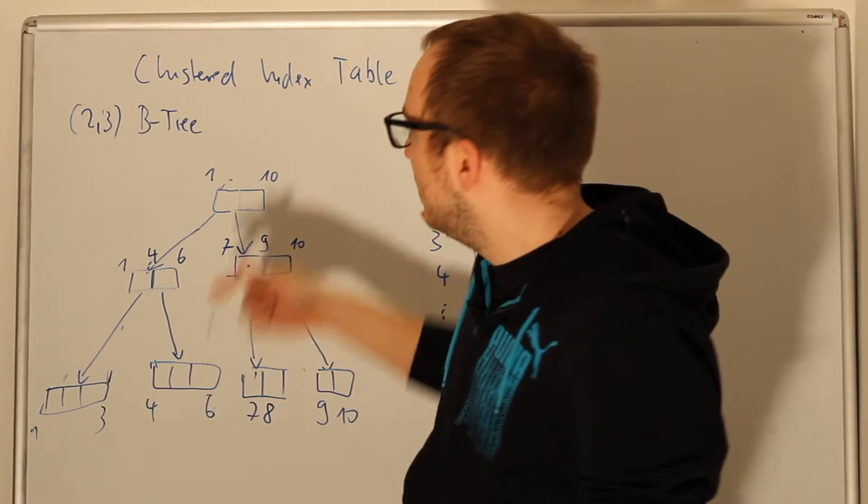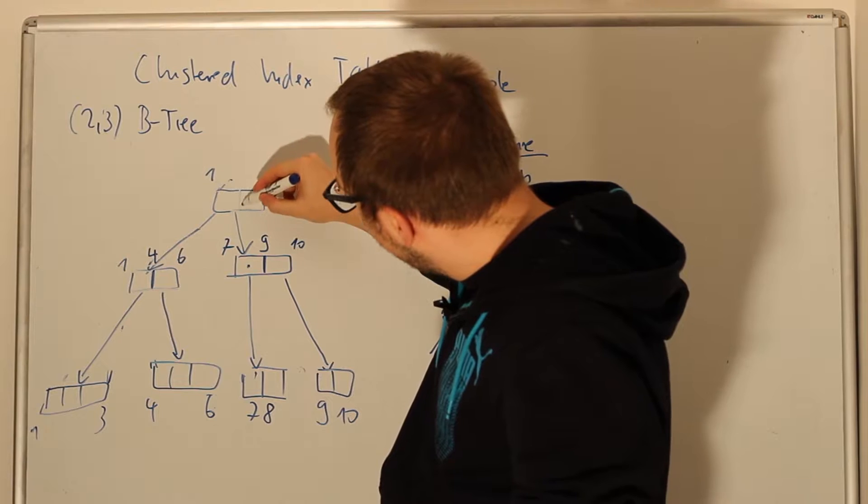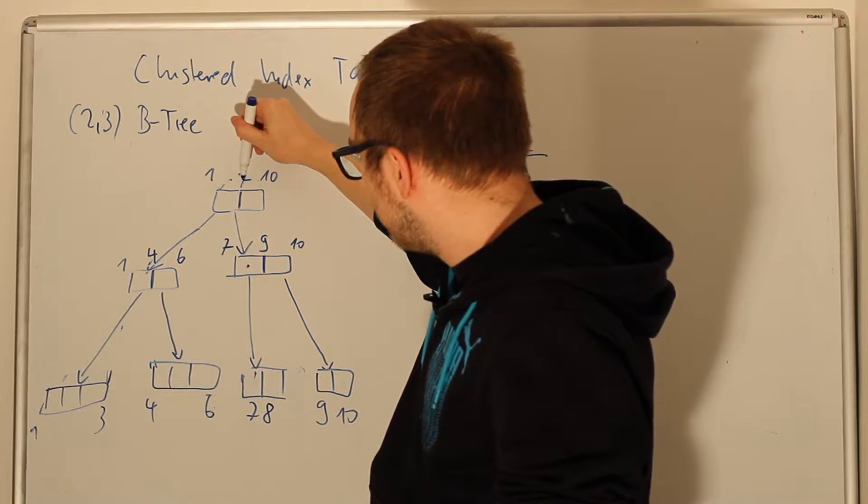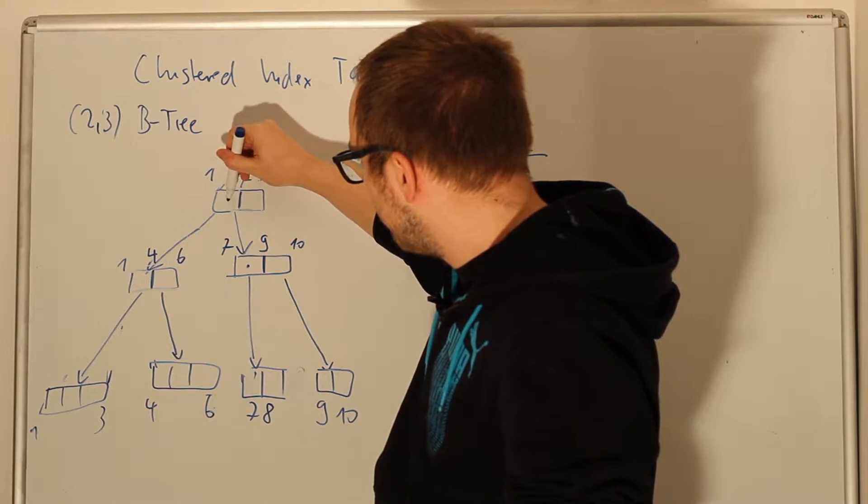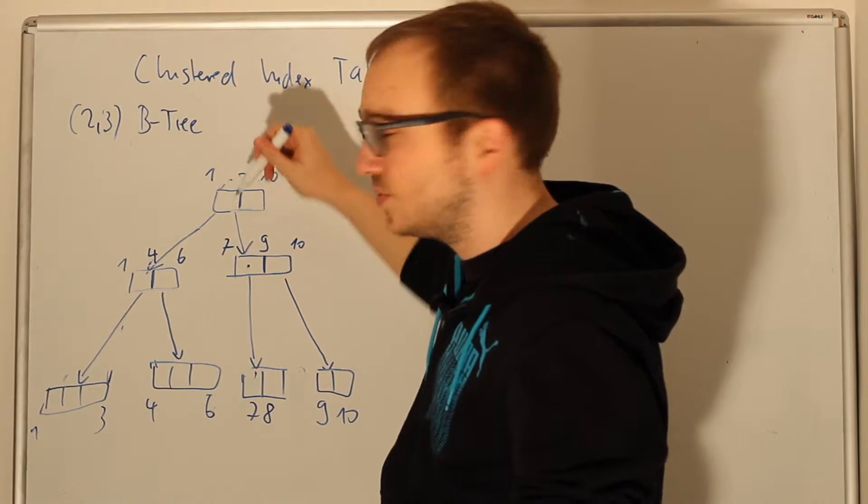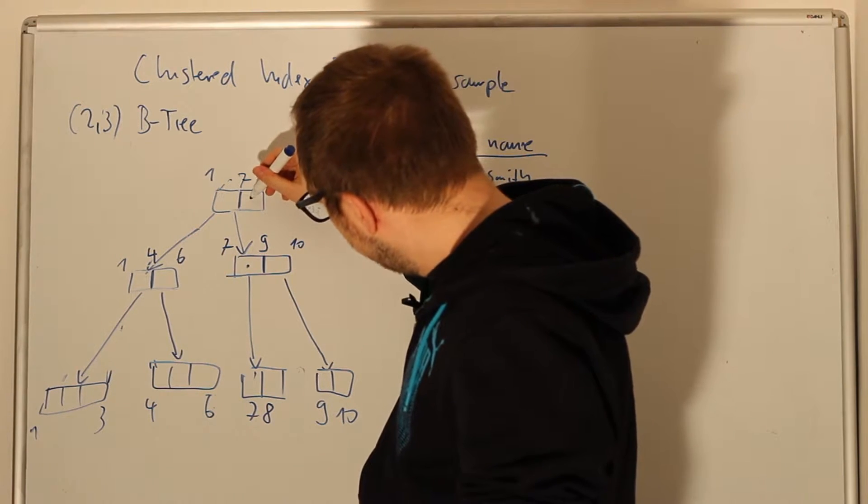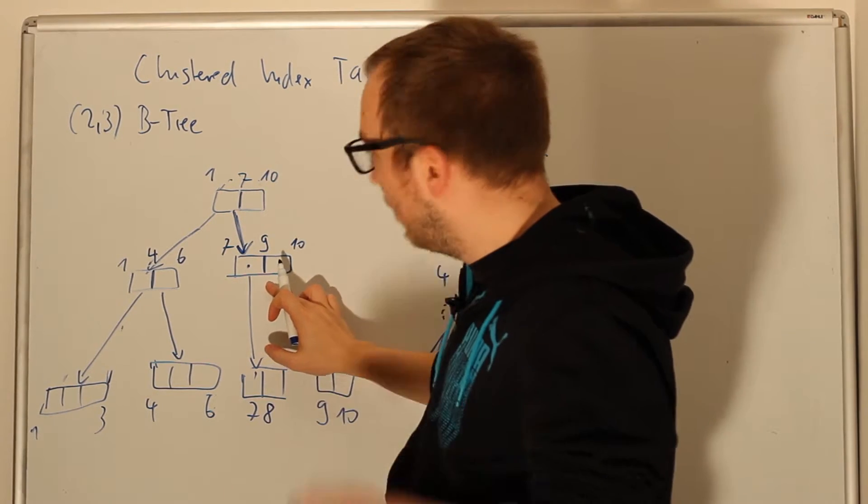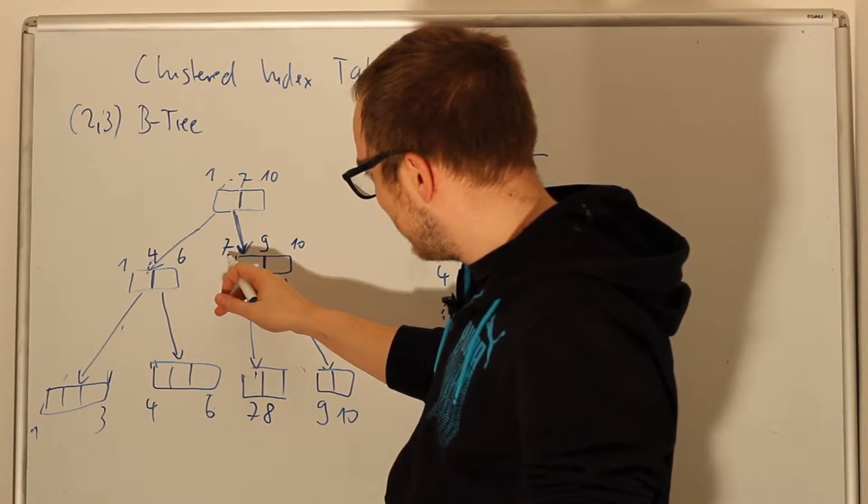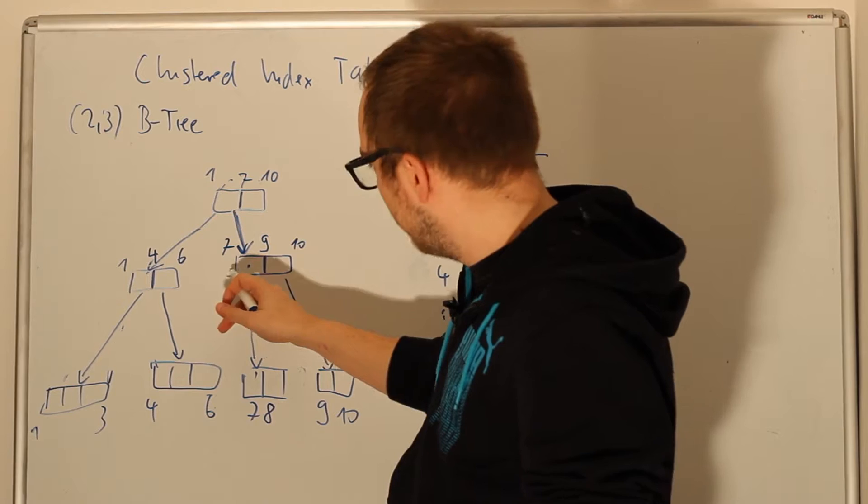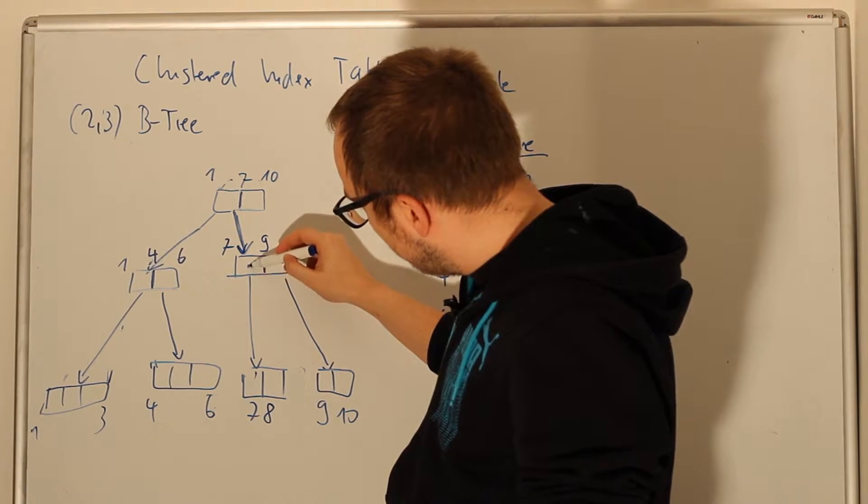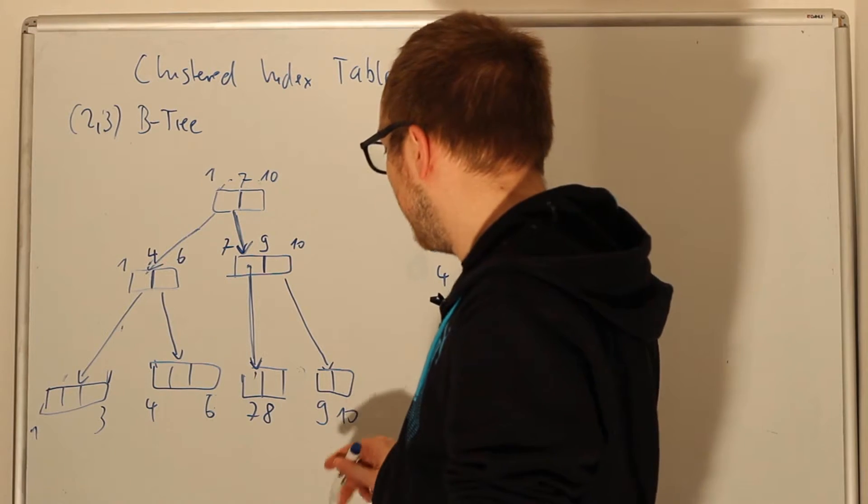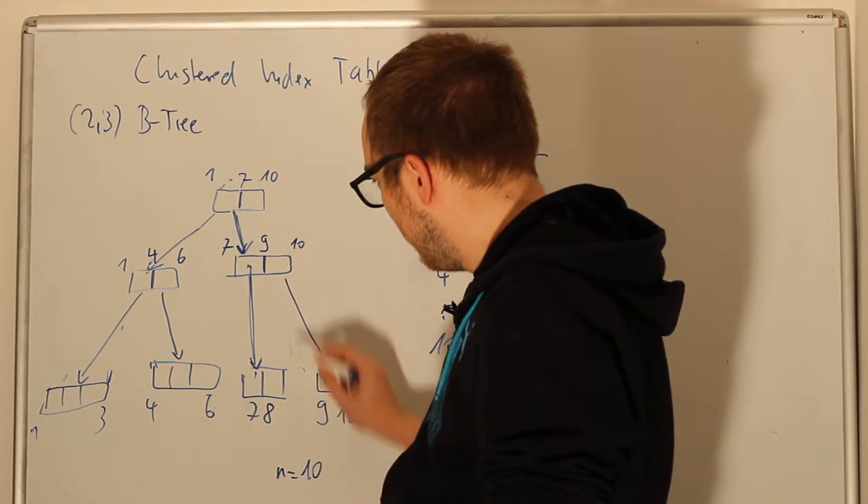Let's assume we're looking for the 7. This node says beneath it we find every key from 1 to 10. The 7 is in the middle, so it says from 1 to exclude 7 you find everything in this first reference, and everything else you find in this reference. Since we're searching for 7, we go this path. Now we have this intermediate node.